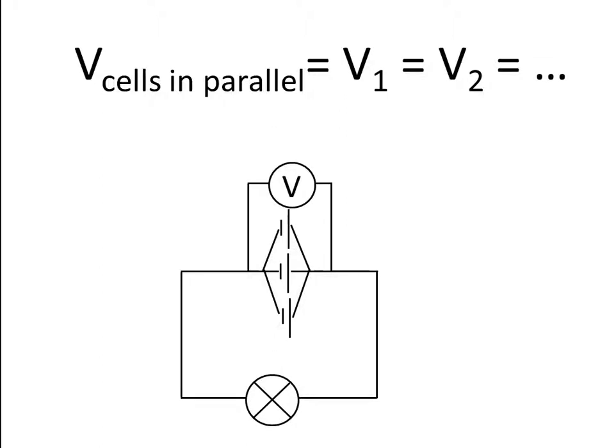We can summarize this in an equation: the voltage across a battery made up of a number of cells in parallel is equal to the voltage across each individual cell, assuming they all have the same voltage. So if we have three 9 volt cells — V1 is 9 volt, V2 is 9 volt, V3 is 9 volt — the voltage across the whole battery is also 9 volt.